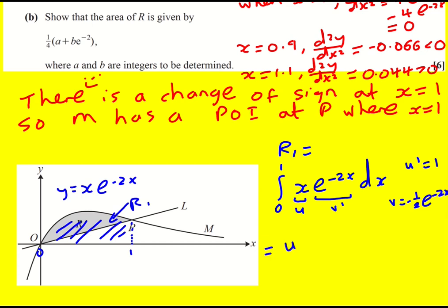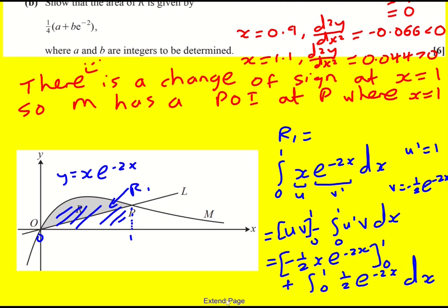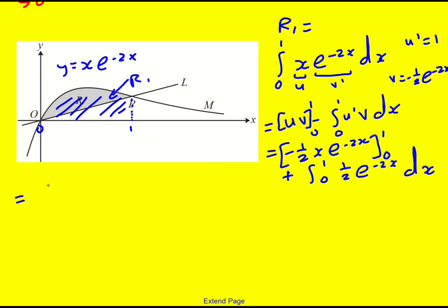So we get u v minus u dash v integrated, except we're going to be putting the limits in, 1 and 0. So minus a half x e to the minus 2x evaluated at 0 and 1, and then minus 1 times v, which is minus a half. So I'll just get rid of that and make it a plus.